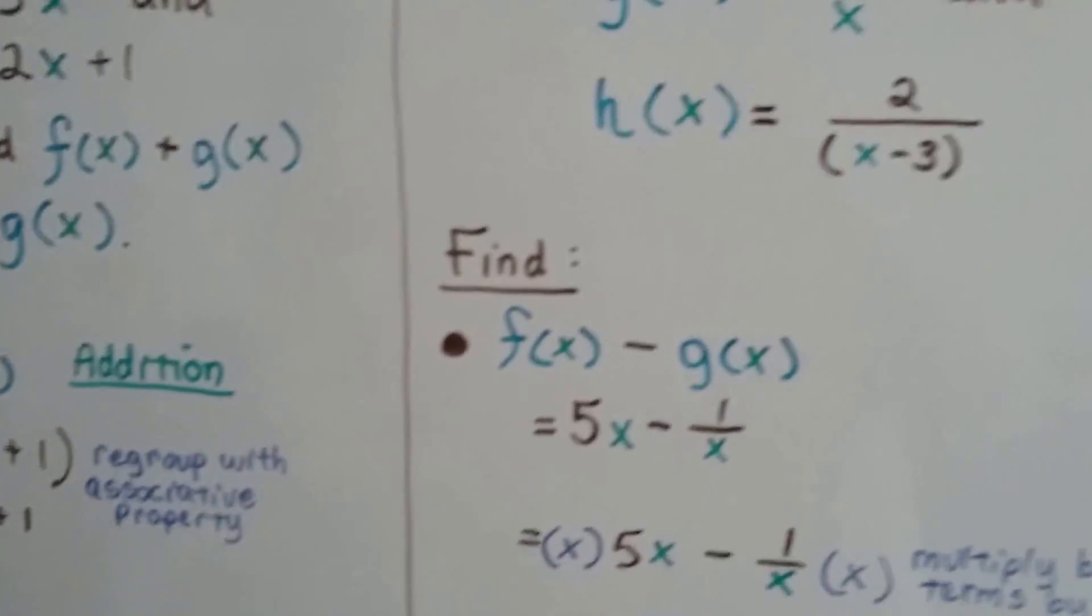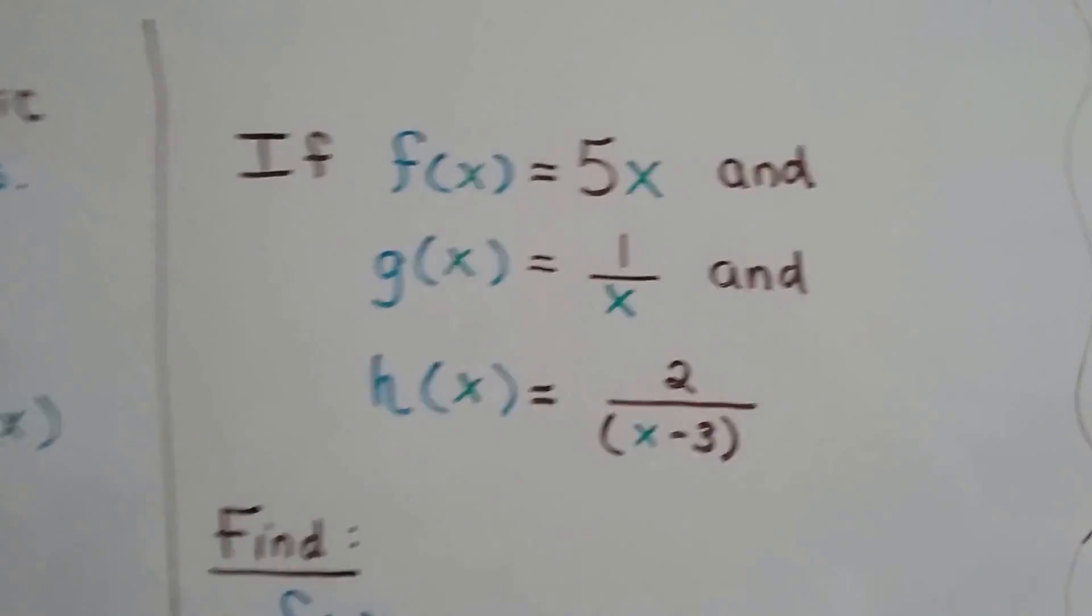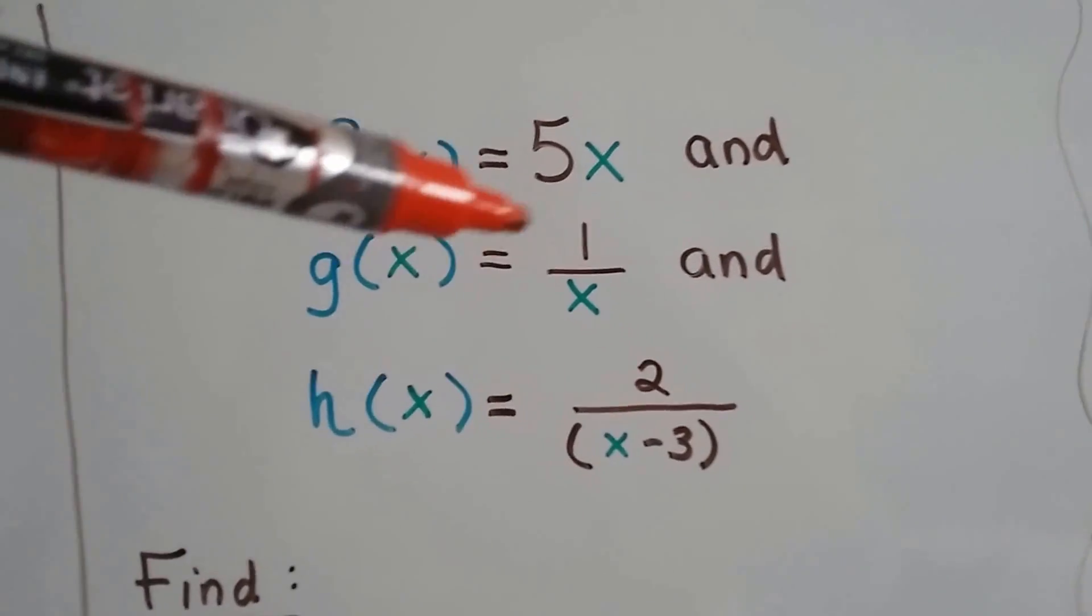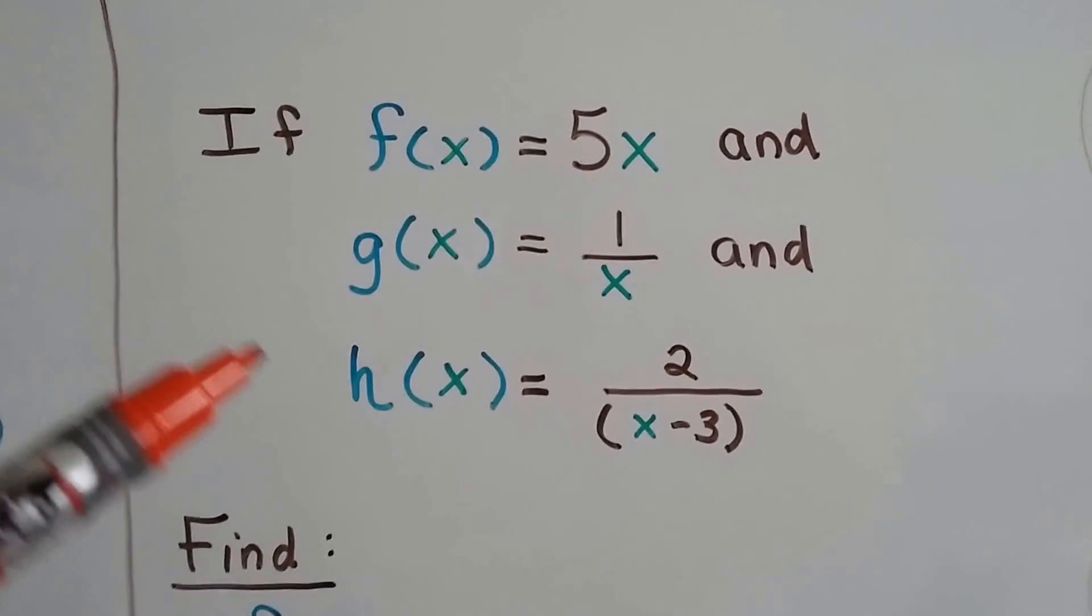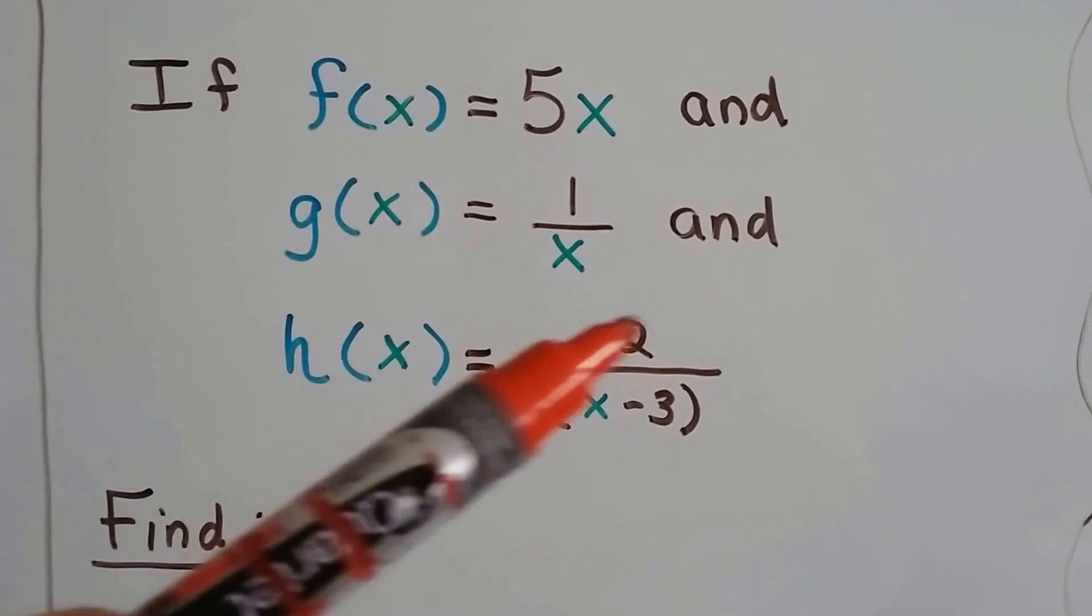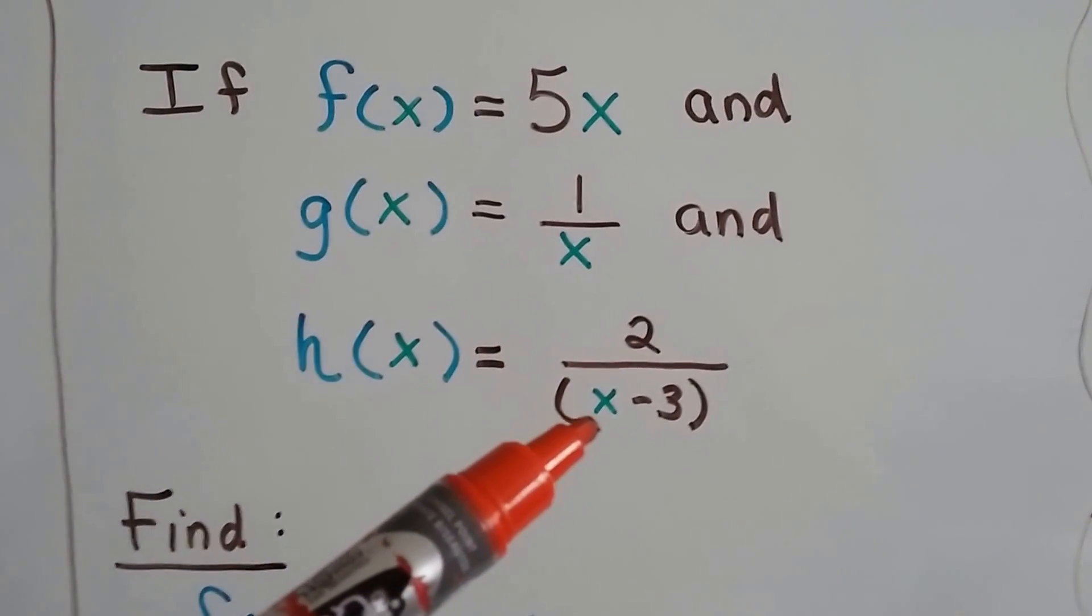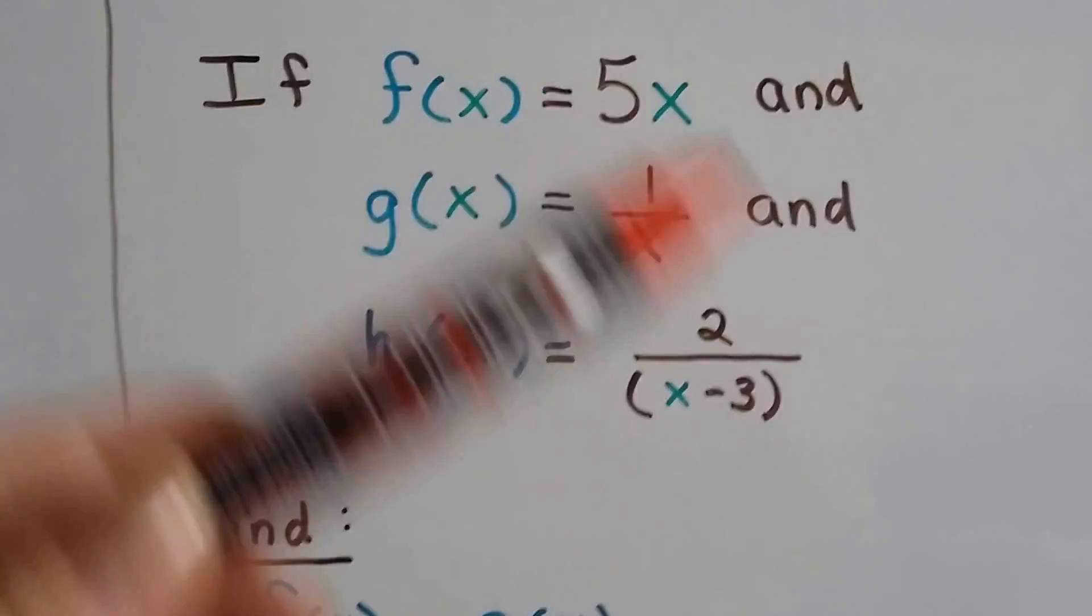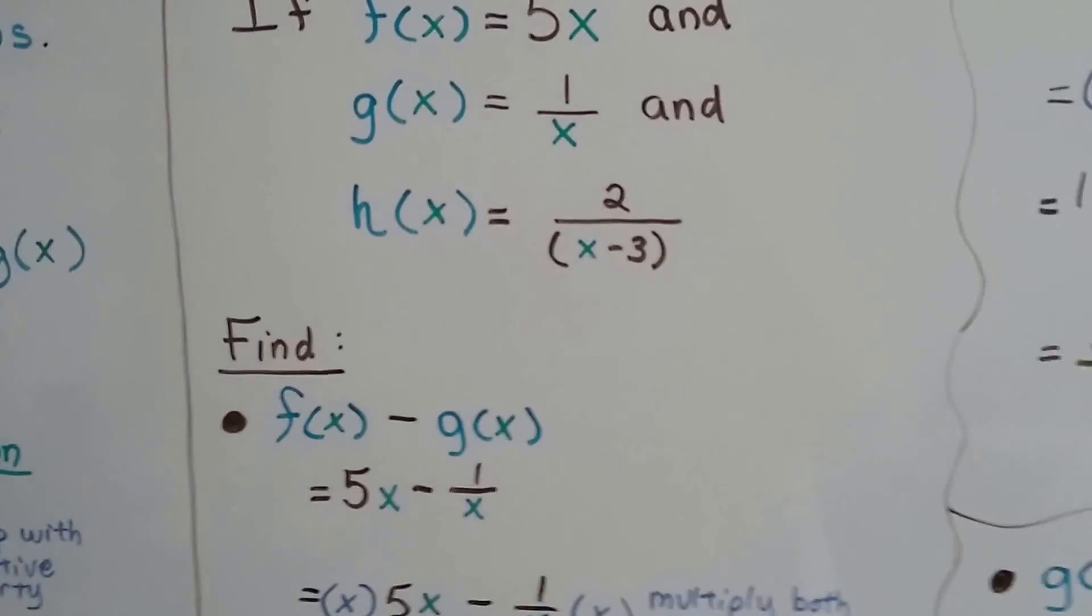Just plug in the numbers. So if we have f(x) is 5x and g(x) is 1 over x and the function h(x) is 2 divided by x minus 3, we can just plug these in to find these.